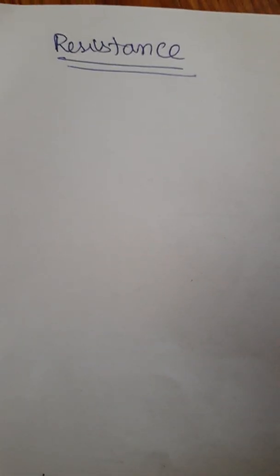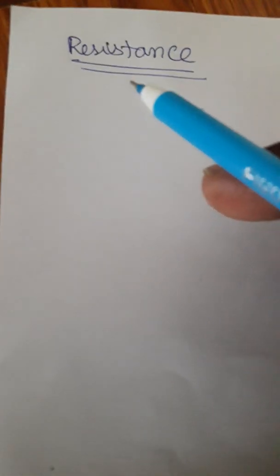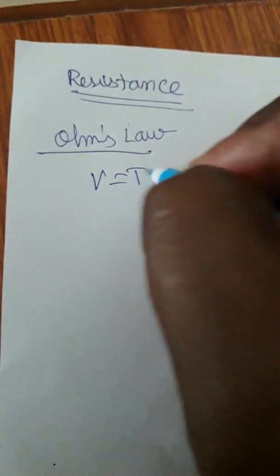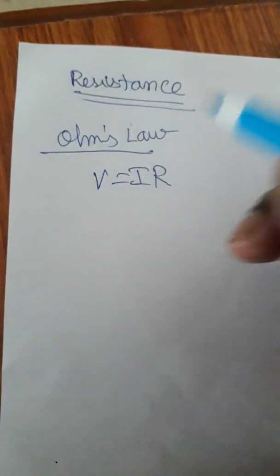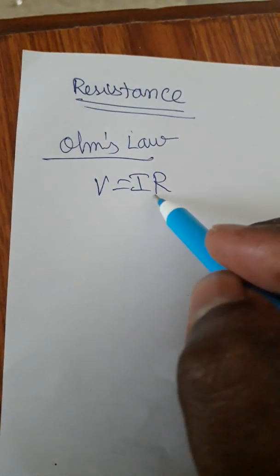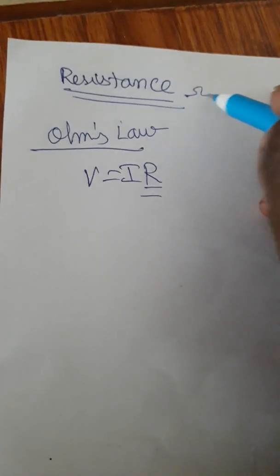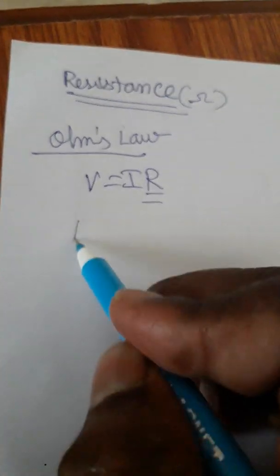Hello friends, today I am going to solve resistance SI unit and dimension formula. As we know Ohm's law, V is equal to IR, we are going to find what is the resistance SI unit and dimension formula.